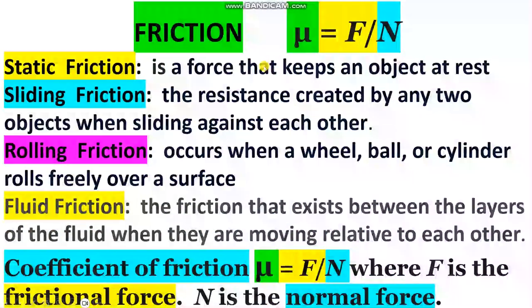This is our subject today. The friction. Friction means resistance to move. This is the formula. If you want to calculate this sample, μ or mu, but maybe μ equals F over N. F means the frictional force. This is the resistance. N is the normal force, the force which applied.